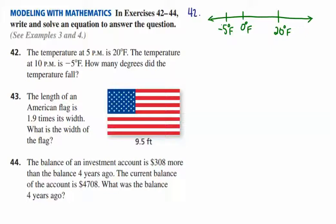So the way that I would look at this then is to determine how many degrees do I fall as I go from 20 to 0. From 20 to 0, I fell 20 degrees. And then again, as I fall from 0 to negative 5, I fell 5 degrees for a total of 25 degrees.